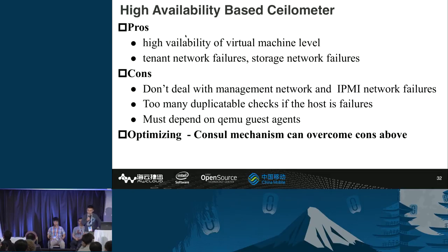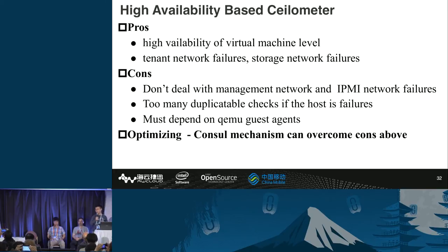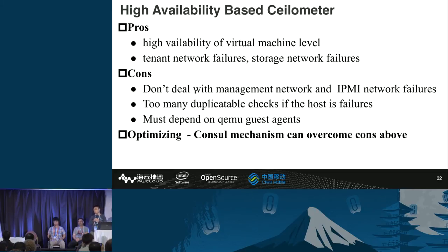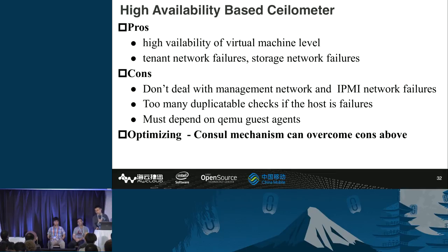Our solution has advantages: it can handle HA at the virtual machine level, dealing with tenant network failures and storage network failures. However, it has disadvantages: it does not handle management network failures or IPMI network failures, it performs many duplicate checks if the host itself fails, and it depends on the QEMU guest agent. Fortunately, by combining with the Consul mechanism we can overcome most of these shortcomings.